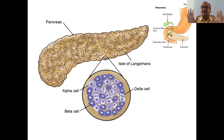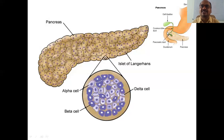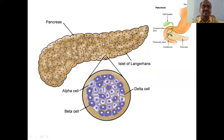Let's see where the pancreas is located anatomically. It fits exactly in the curvature at the lower end of the stomach. This is the stomach, and at the junction of the intestine, under the stomach — exactly in that curve — the pancreas fits in. The structure of the pancreas is shown here.